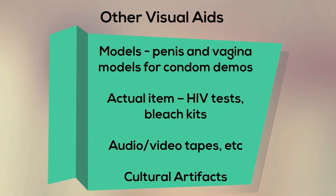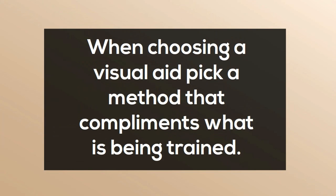Other visual aids include models such as penis and vagina models for condom demos, actual items like HIV tests and bleach kits, audio and video tapes, and cultural artifacts. When choosing a visual aid, pick a method that complements what is being trained.